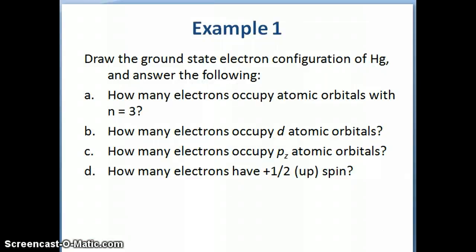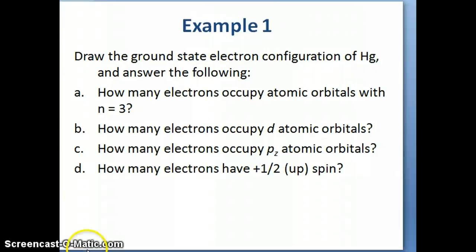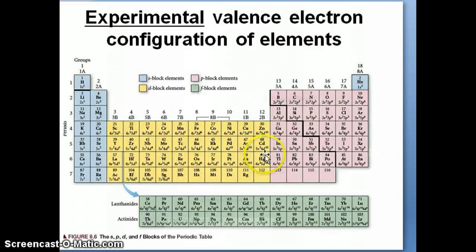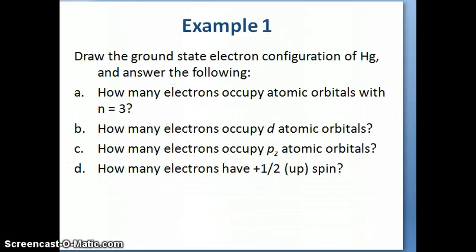When you look at a question asking for the ground state electron configuration of mercury, the first thing you want to do is figure out how many electrons are in mercury. You can do this by looking at the periodic table — mercury has an atomic number of 80, which means in the atomic state it also has 80 electrons. Then we have to answer some questions related to the electron configuration.